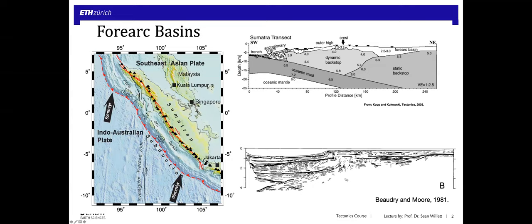In the marine setting where we have true oceanic subduction, the forearc basin is one of the major structural features of an active margin. As an example, we can see Southeast Asia — the island of Sumatra — the subduction zone and the trench that run along the coast of Indonesia. We have an accretionary wedge between the trench and the arc, but the topographic high is this series of islands that fall right along the coastline, behind which is a small basin.